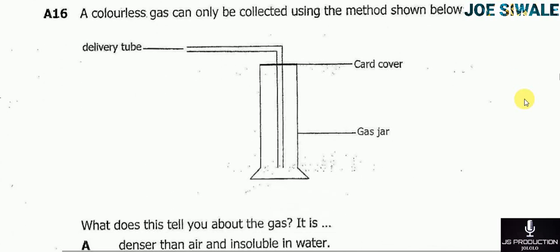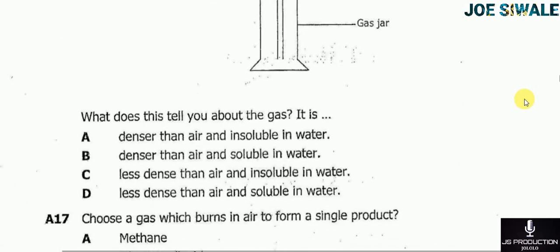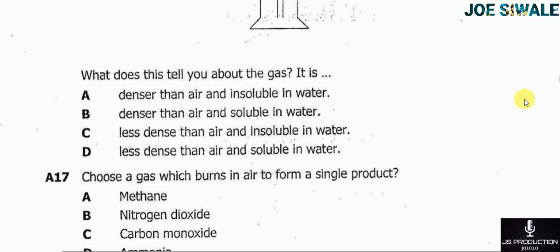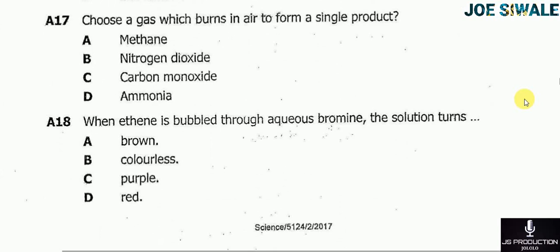Question 16 reads: a colorless gas can only be collected using the method shown in the diagram. What does this tell you about the gas? A — denser than air and soluble in water; B — denser than air and insoluble in water; C — less dense than air and insoluble in water; D — less dense than air and soluble in water. The answer here is B, denser than air and insoluble in water.